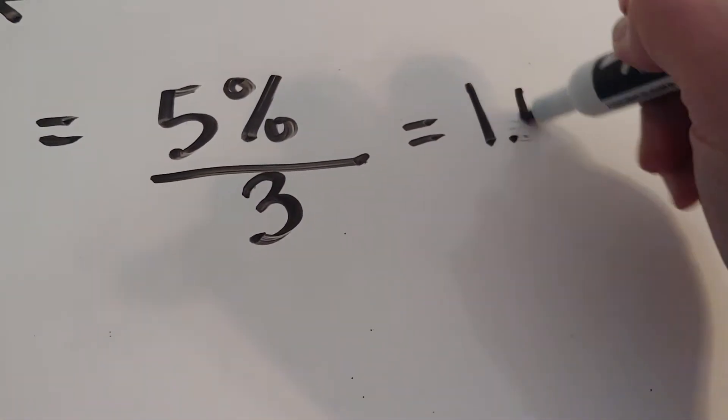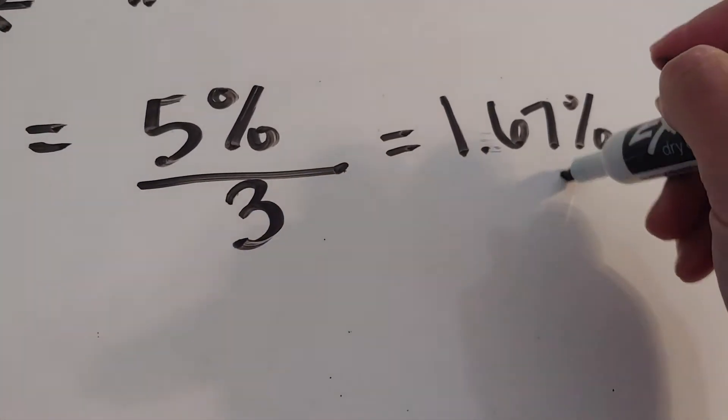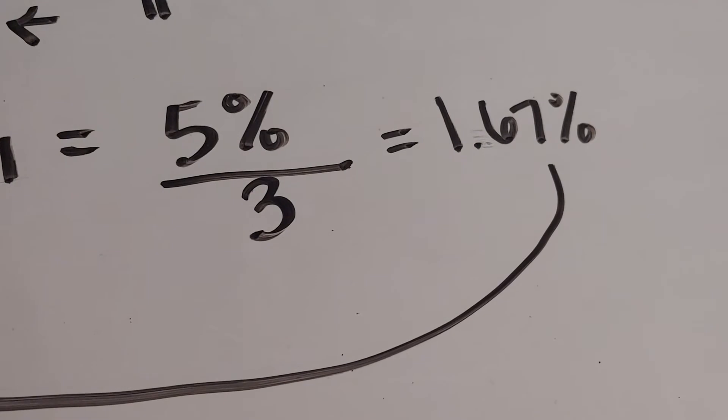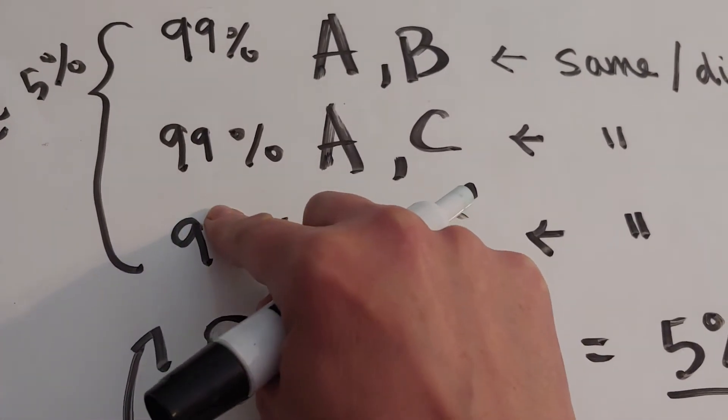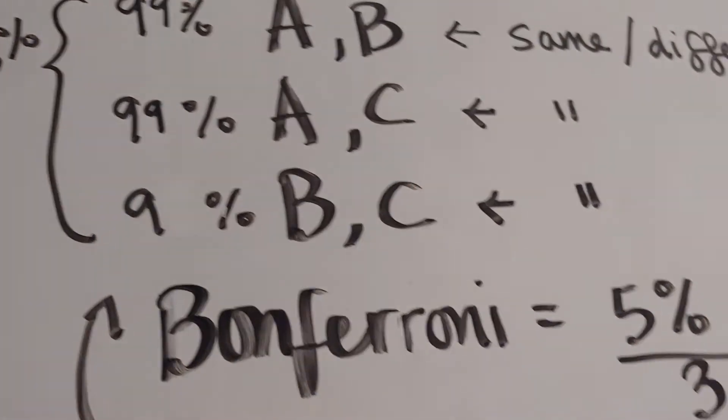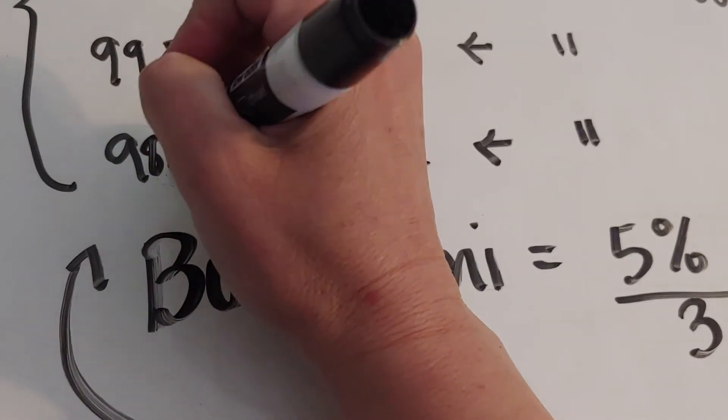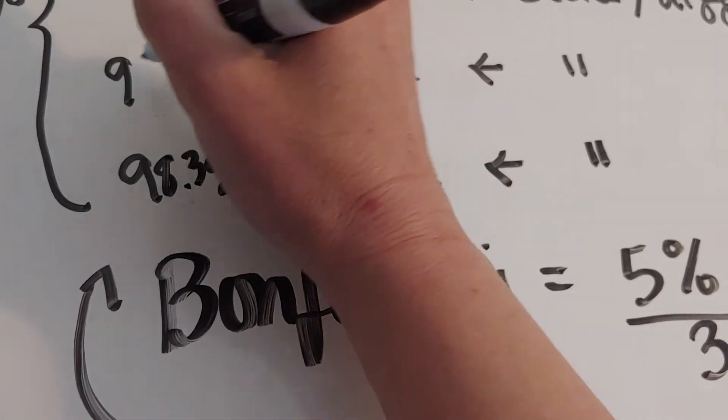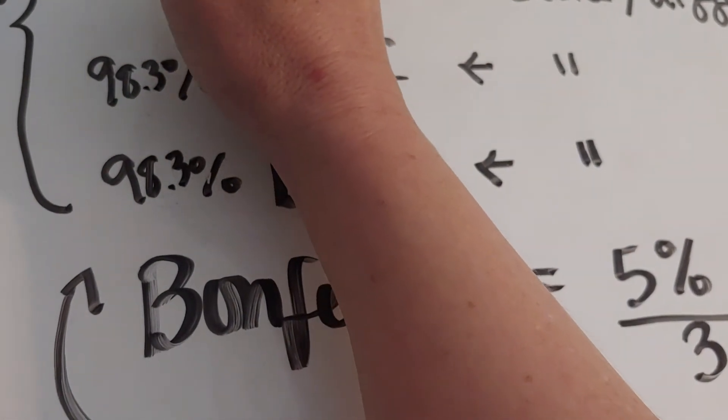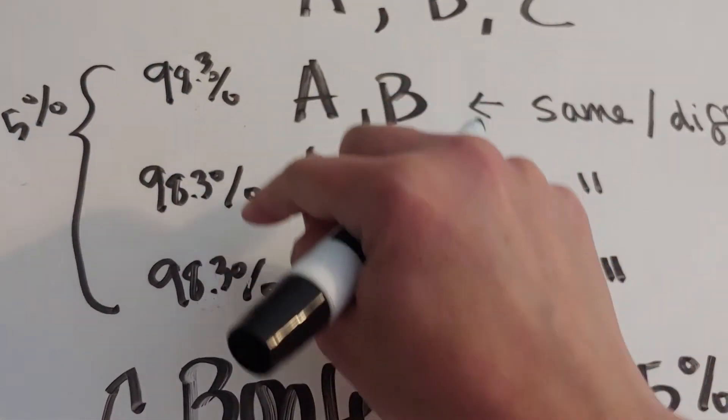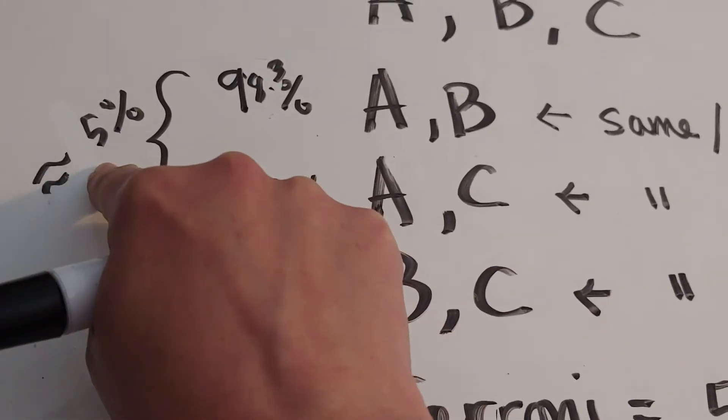If we do that, we get 1.67%. What that is basically saying is, to get an overall of 5%, I actually can do 100 take away 1.67. So I really want to do 98.3, 98.3, and 98.3. The reason why I want 98.3 each time is 1.7 plus 1.7 plus 1.7 is a total of 5.